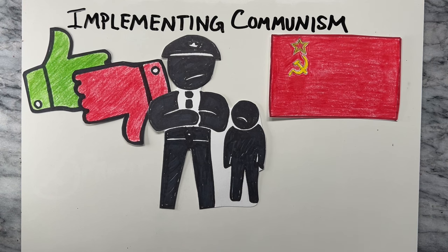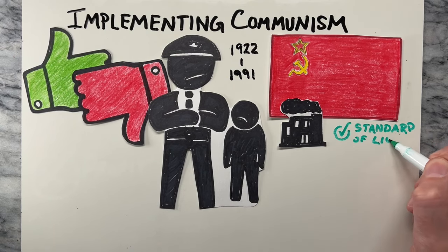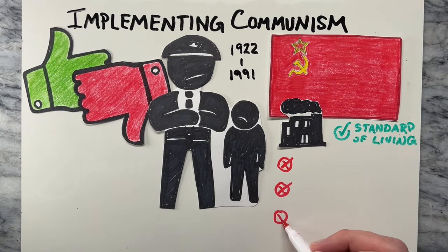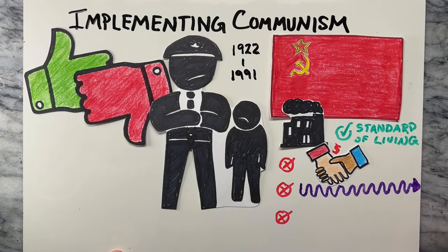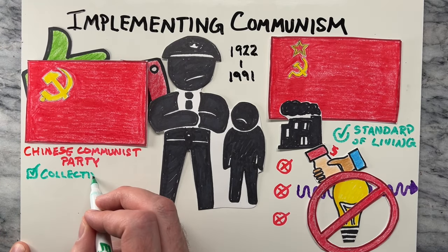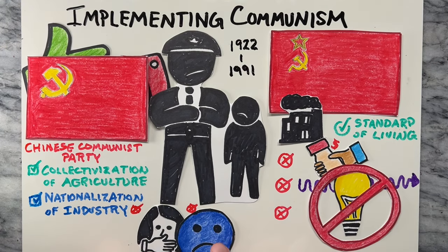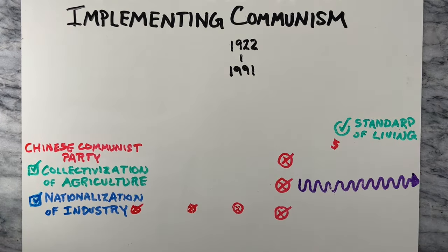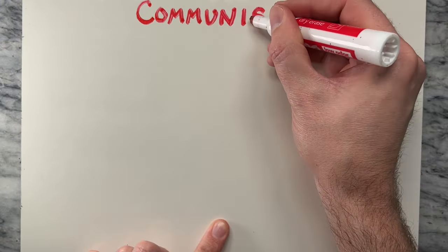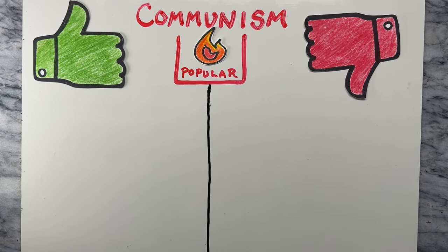The Soviet Union, for example, was a communist state that was founded in 1922 and collapsed in 1991. While the Soviet Union was initially successful in industrializing the country and improving the standard of living for many people, it eventually became bogged down by corruption, inefficiency, and a lack of innovation. Similarly, China has been governed by the Chinese Communist Party since 1949. While the party has implemented a number of communist policies, including the collectivization of agriculture and the nationalization of industry, it has been criticized for its political repression, human rights violations, and environmental degradation. Despite these challenges, communism remains a popular ideology in many parts of the world, particularly in countries with a history of colonialism and imperialism.